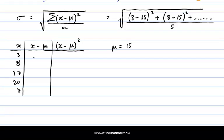So for each of our pieces of data, we need to subtract 15. So 3, take away 15, gives us minus 12. 8, take away 15, is minus 7. 37, take away 15, is 22.